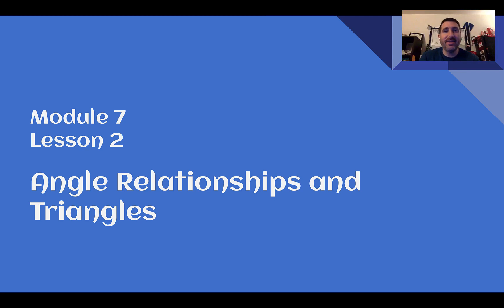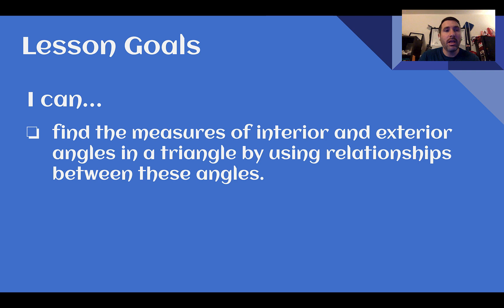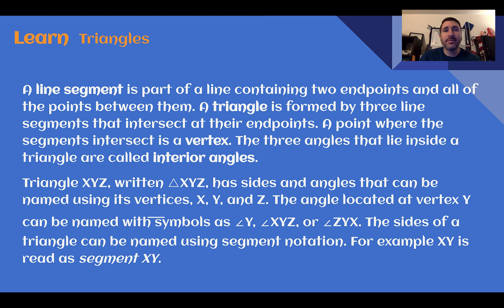Hey there, Mr. Weaver here, and this is 8th grade, Module 7, Lesson 2, Angle Relationships and Triangles. After this lesson, you need to be able to find the measures of interior and exterior angles in a triangle by using relationships between these angles. Let's learn.